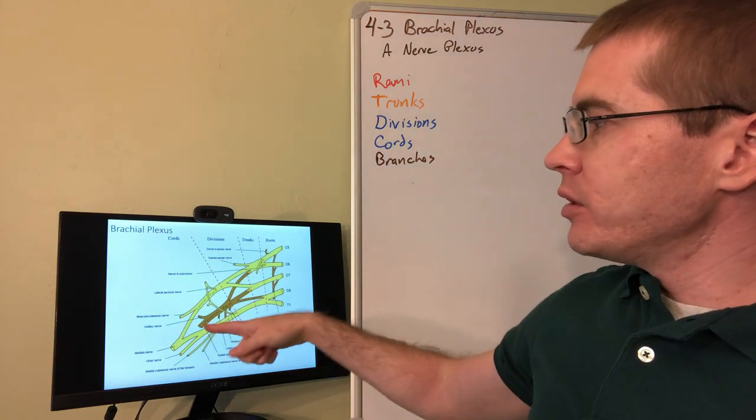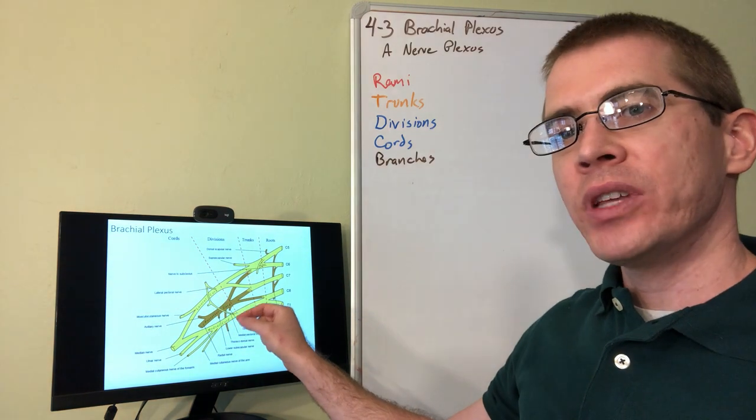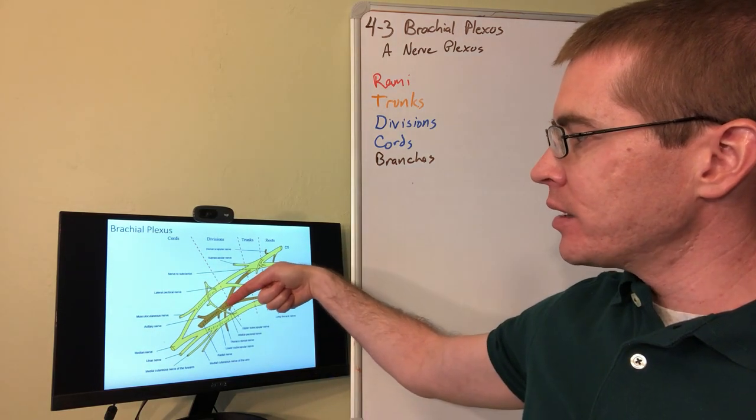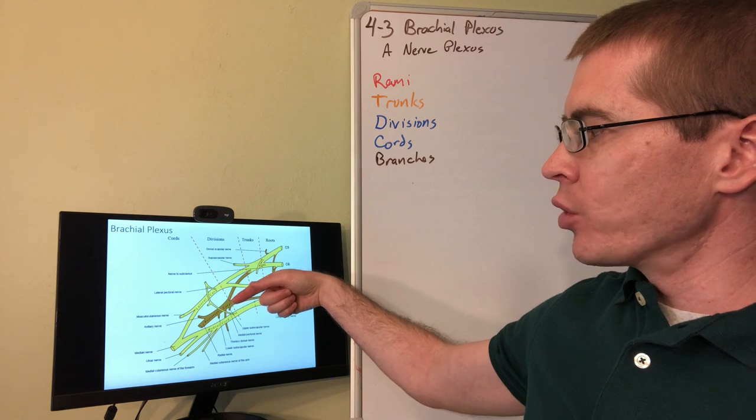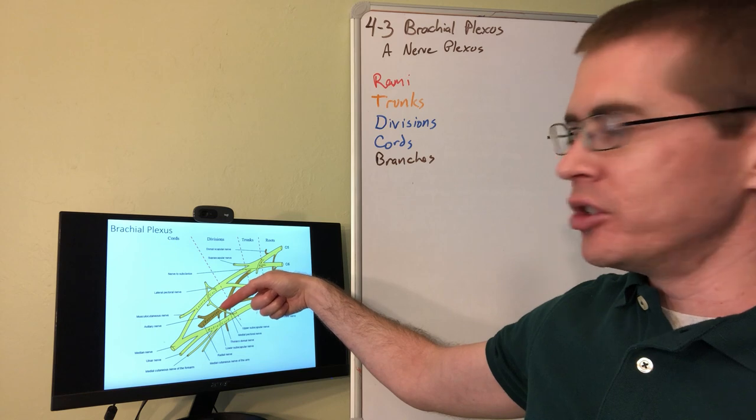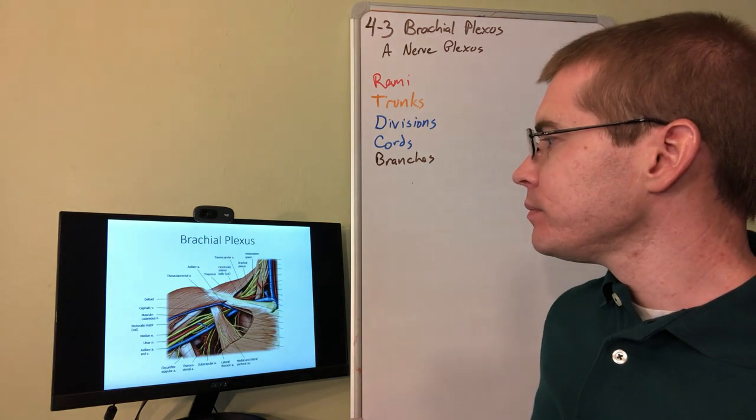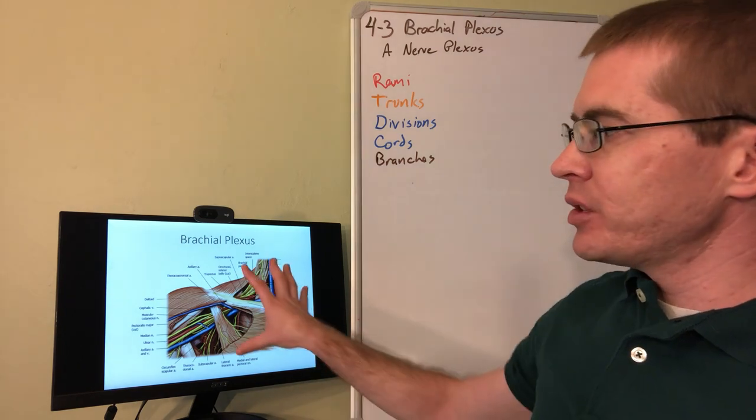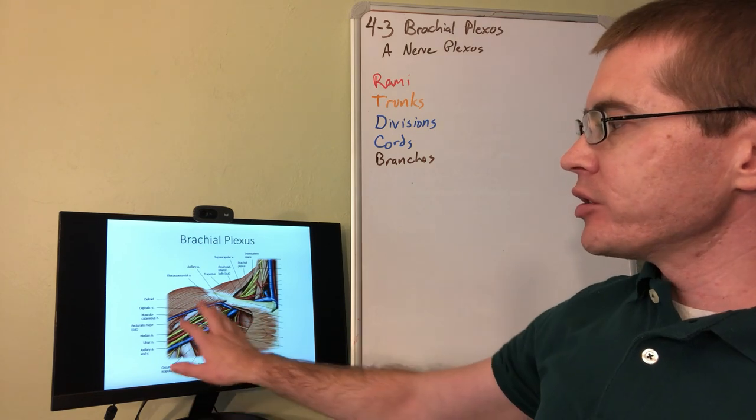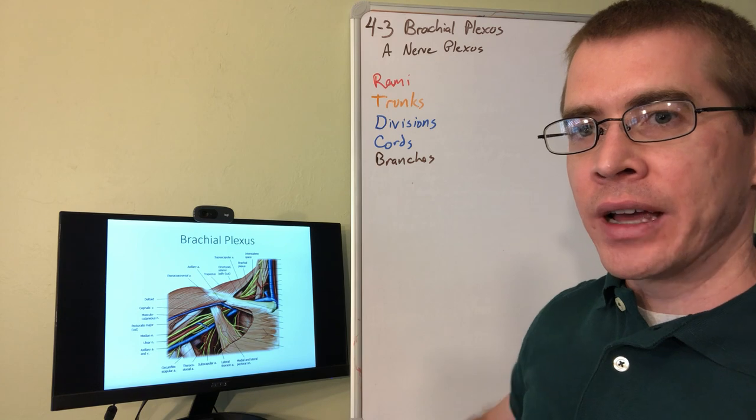So the cords themselves are named after where they are in relation to the axillary artery. So the axillary artery runs right in here, anterior to the posterior cord, but deep to the lateral and medial cord. So this is where the axillary artery will be just in front of posterior cord. That's why posterior cord is called posterior. And then this is what the brachial plexus looks like in the axillary region. And so when we get to the dissection, this is what we want our cadavers to look like.